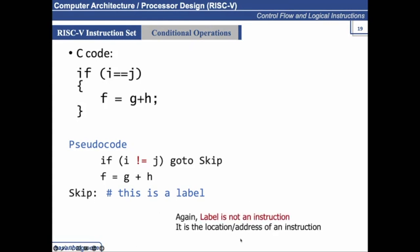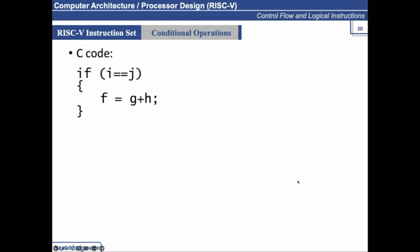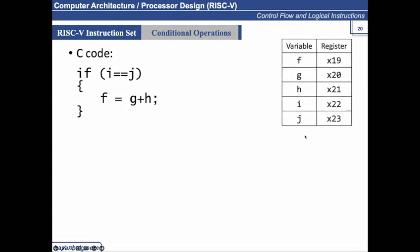A label is not an instruction — it is the location or the address of an instruction in memory. We have a big memory in our system: we categorize part of it as instruction memory where instructions are stored, and separately as data memory where data is stored. Every location has an address.